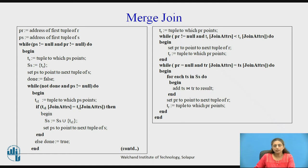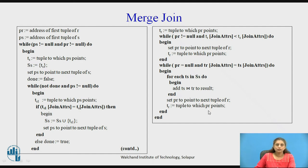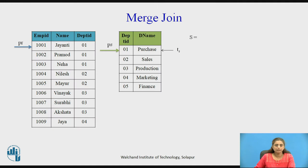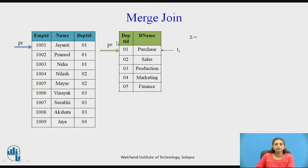Once a mismatch is found, we go back to reading the next tuples from relation S and start the comparison again. This is the algorithm — you can go through it, and we will see it with an example. Consider two relations: employee and department. The common attribute here is department id.